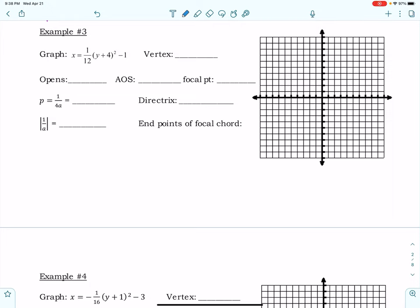This video is for pre-calculus unit 10 conic sections. We are still dealing with parabolas. So the very first thing we're going to do in this example is look at our equation. Notice right away that x is equal to 1/12 times (y+4)² minus 1.